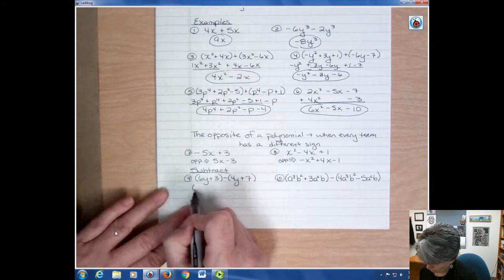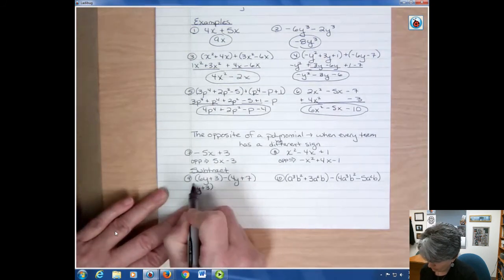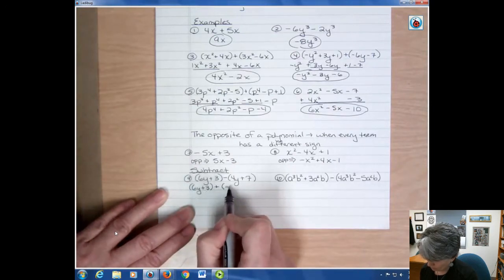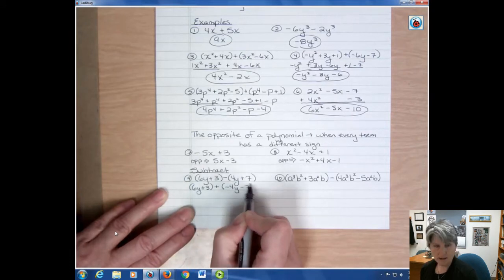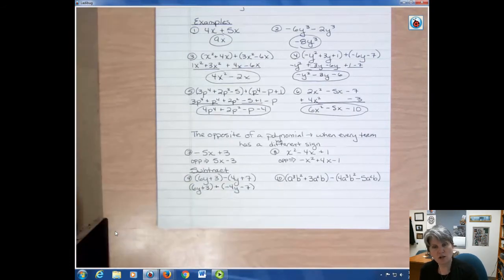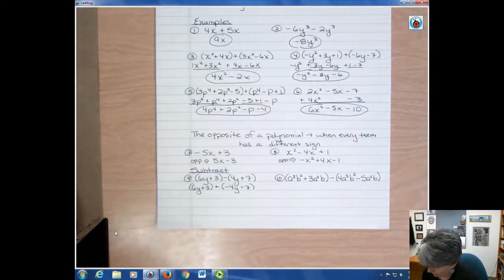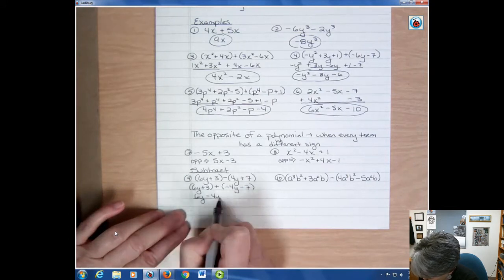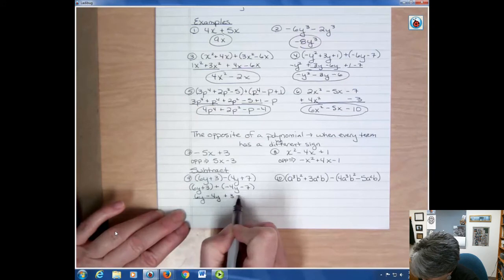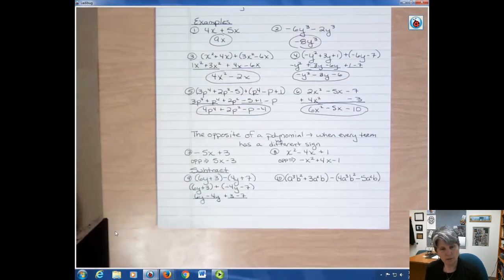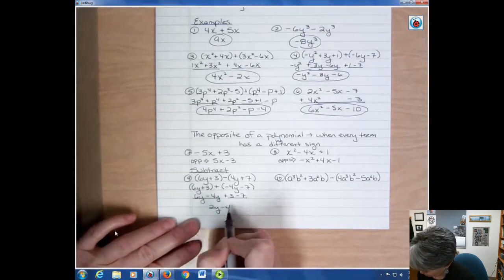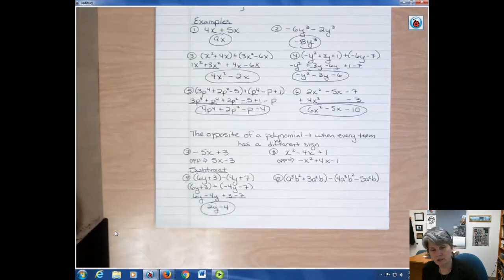I'm going to rewrite this 6y plus 3—that doesn't change because I don't have anything in front of that. I'm changing that to plus, and I'm going to write the opposite of what's in here, which is minus 4y minus 7, because the opposite is just change the sign of everything. Now I'm ready to combine those. I have 6y minus 4y—those are like terms. And I have a positive 3 and a minus 7, and those are like terms. So I can combine that, and that would give me 2y and minus 4.